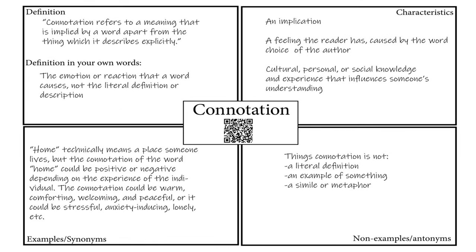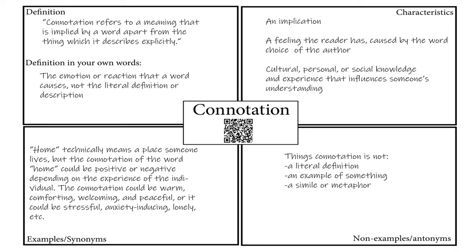The final quadrant is where students come up with non-examples or antonyms — things that connotation is not. Those would be a literal definition, an example of something, or a simile or a metaphor. This final box really solidifies their understanding by helping students eliminate things that might be a disruption to the clarity.